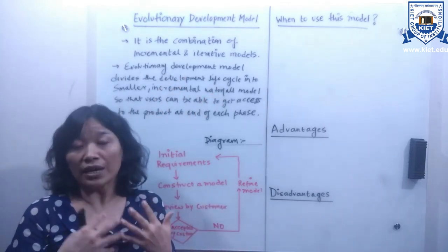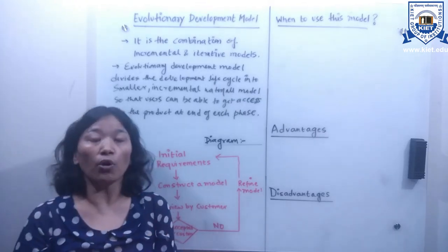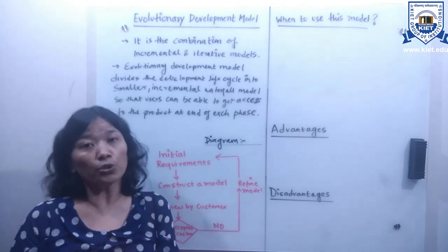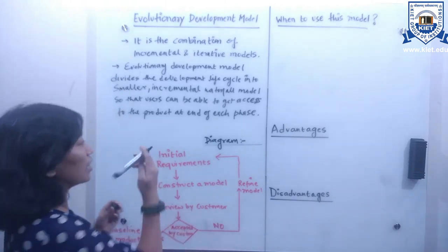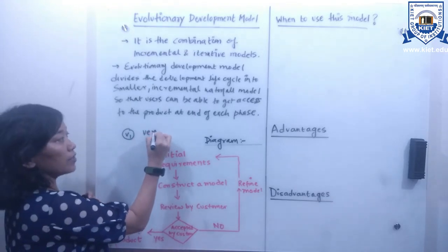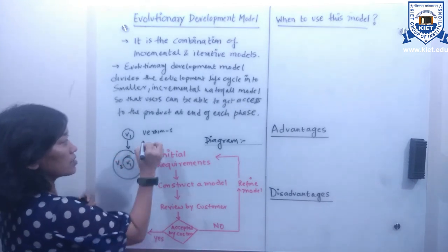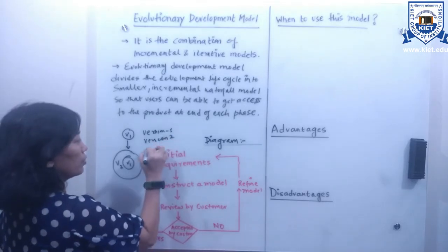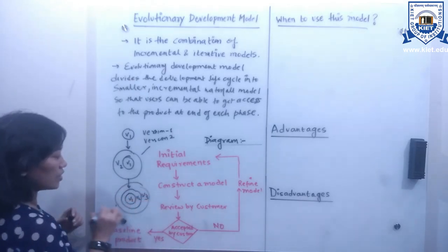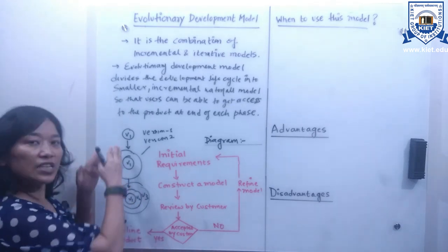Users are able to get access to a product at the end of each cycle. The evolutionary model breaks down the tasks into smaller chunks, prioritizes those tasks, and then delivers them to the customer one by one — in stages, for example as version 1, version 2, and so on.